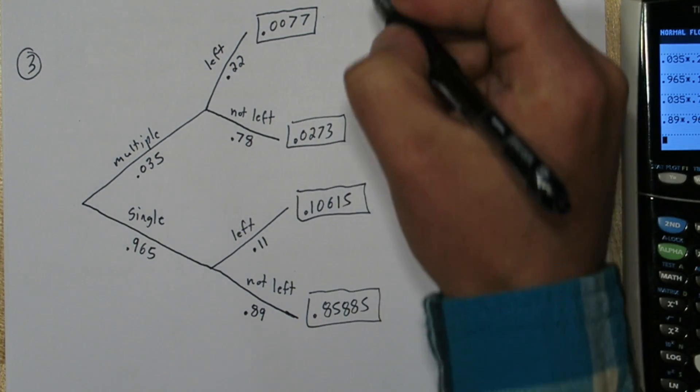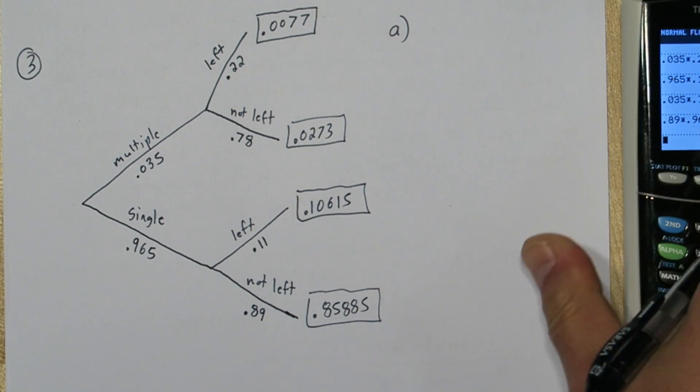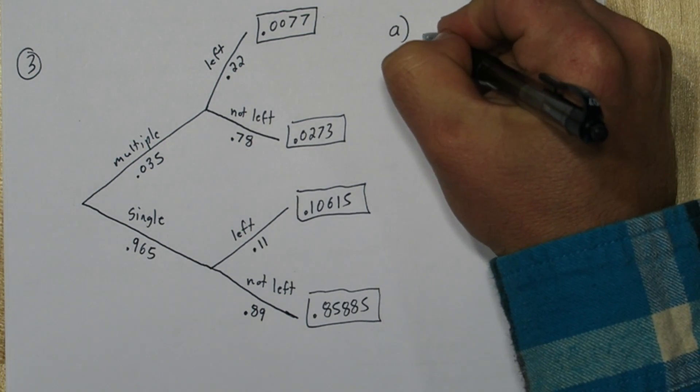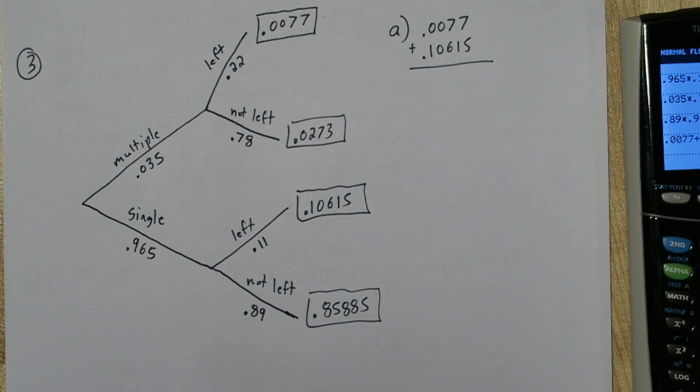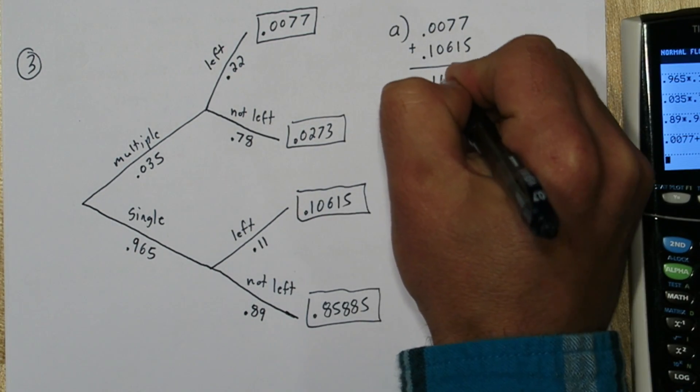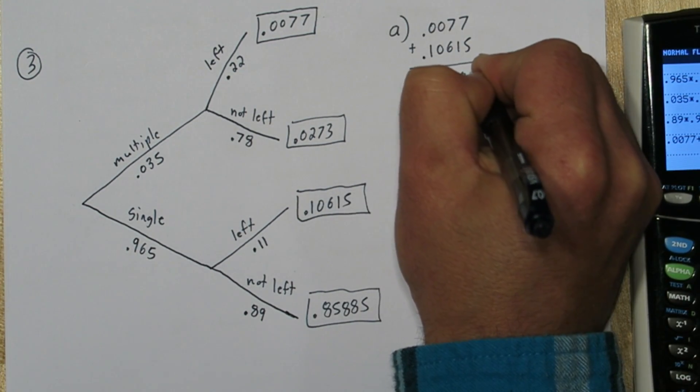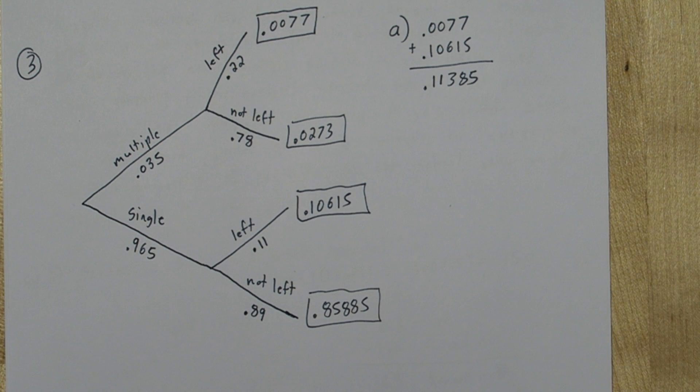So now we can answer part A. What's the probability a randomly selected child is left handed? We can simply add these two left hand probabilities and we'll have our answer. So the probability a randomly selected child is left handed is 0.11385.